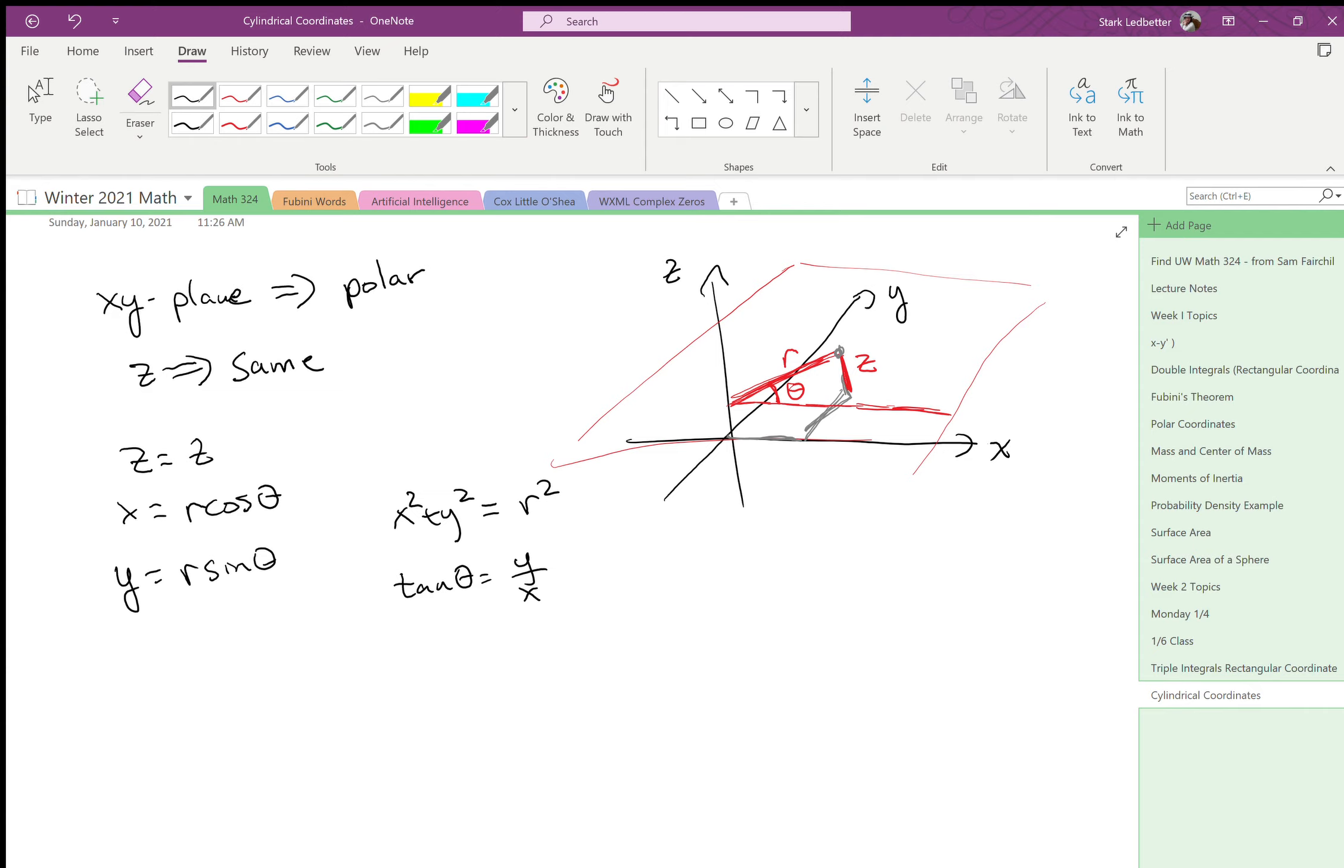So a couple things that are instructive, you don't necessarily have to know this, but we have variables r, theta, and z. Things that are instructive are what if we set those to a constant. So what if r equals two? What is that?